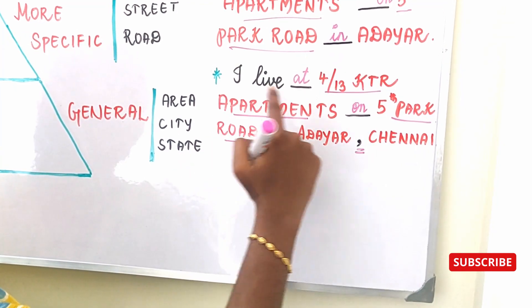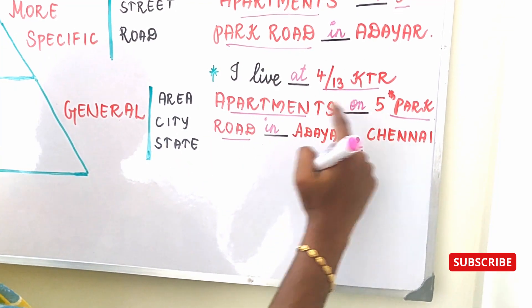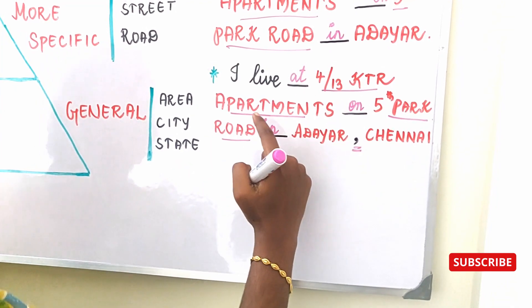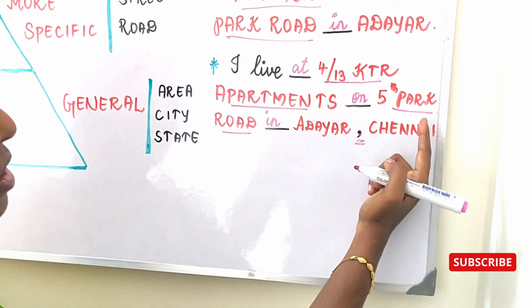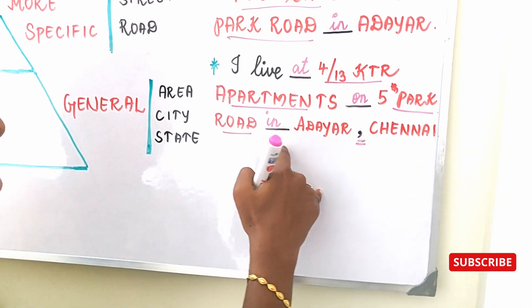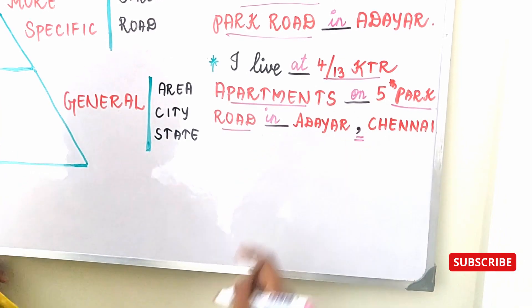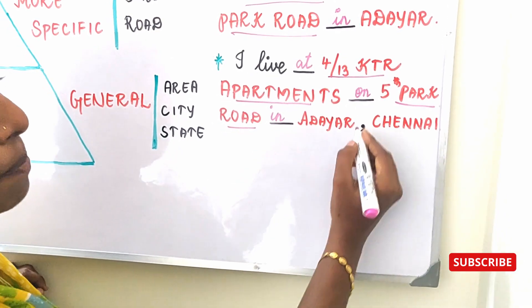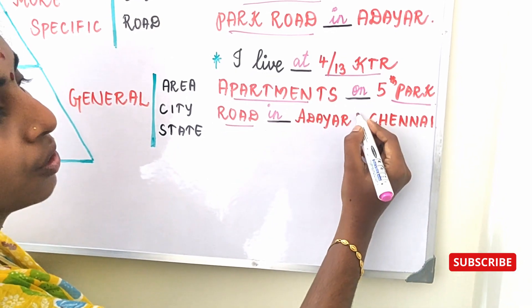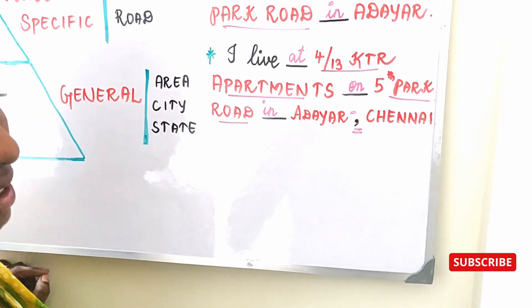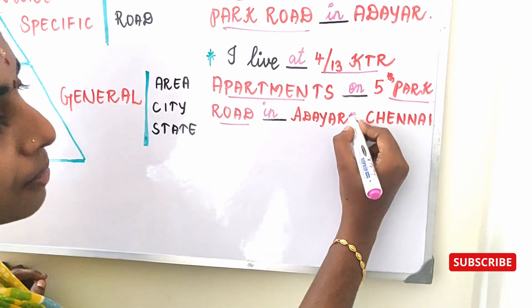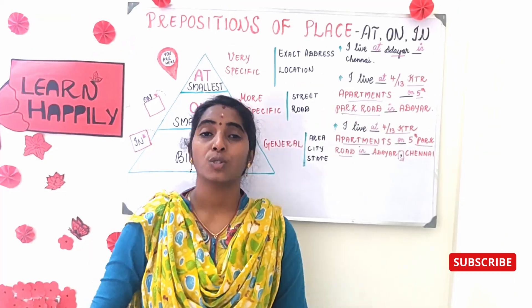So the full sentence is: I live at 4/13 KTR Apartments, on 5th Park Road, in Adayar, Chennai. You should give a little pause at the comma, and that's the meaning of the comma here.